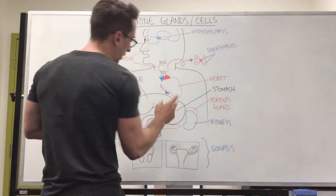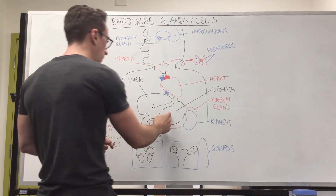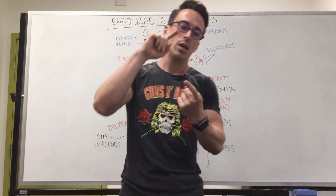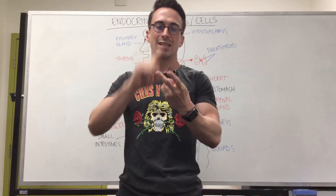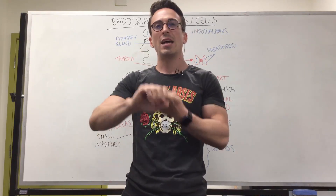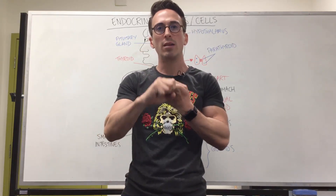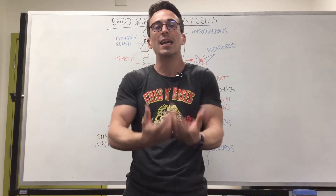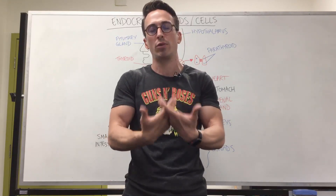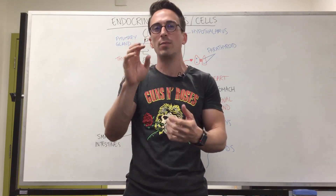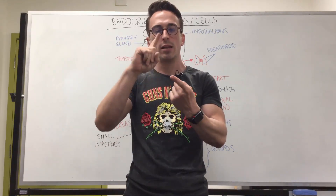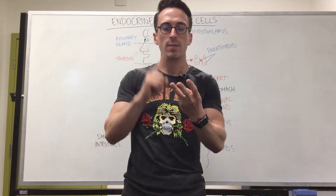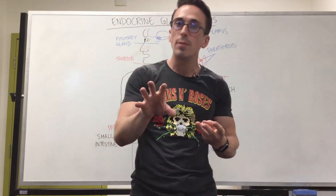Looking at the stomach, it has a number of different hormones it can release, including ghrelin, gastrin, and somatostatin. A lot of them play an important role in hunger, eating, and stimulating hydrochloric acid production by stimulating the parietal cells. Ghrelin and gastrin stimulate it, while somatostatin inhibits it.